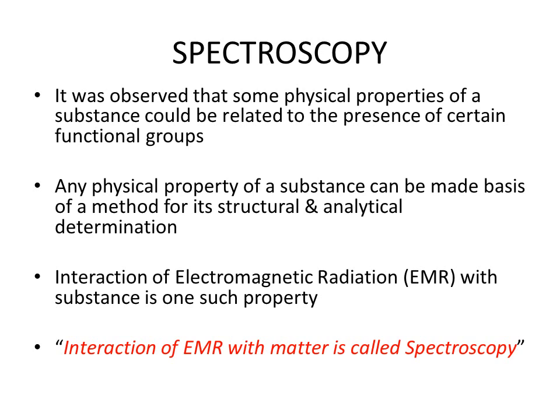Now, what is spectroscopy? It has been observed that different substances have different physical properties, different chemical compounds, and different functional groups. These physical properties can be related to some of those functional groups. Any physical property of a substance can be made the basis of a method for its structural and analytical determination. One such property is the interaction of electromagnetic radiation with substances. Spectroscopy is defined as the interaction of electromagnetic radiation with matter.